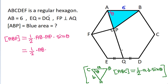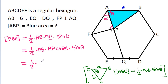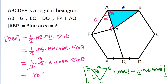FP is perpendicular to AQ, which means this angle will be 90 degrees. Suppose this angle is alpha, then AP will be AF times cos alpha. So the area becomes 1/2 times AB times AF times cos alpha times sin theta. AB is 6 and AF is 6, so this is 18 times cos alpha times sin theta.